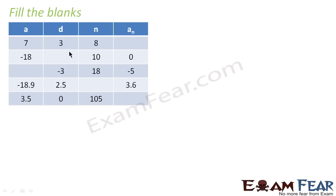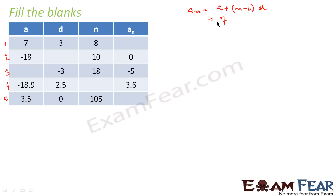Now let's take a fill-in-the-blanks exercise. We are given values of a, d, n, and a_n with some missing. For the first part: a_n = a + (n-1)d. Here a = 7, n = 8, d = 3. So a_n = 7 + (8-1) × 3 = 7 + 7 × 3 = 7 + 21 = 28. So a_n is 28.